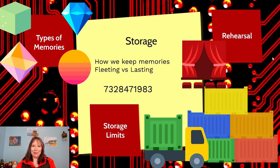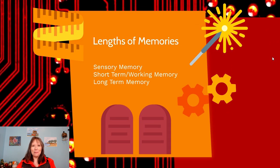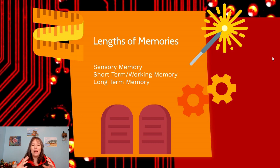First, we're going to talk about different types of memories, because our brain is capable of storing many different subtypes. We have to consider the length of our memories, and we think about at least three levels. The very quickest and most fleeting type is our sensory memory — this is really just how long it takes for our sensory nervous system to get information to our central nervous system. It's very quick, but it's not instant.